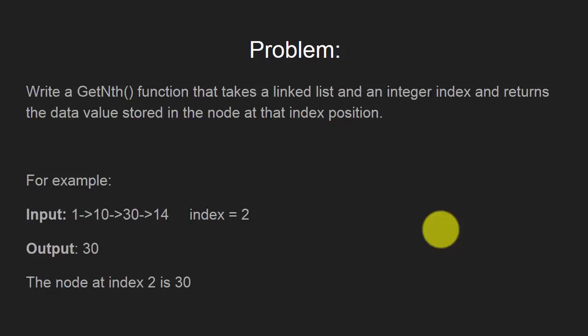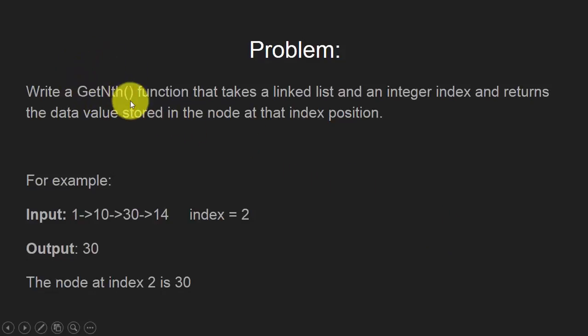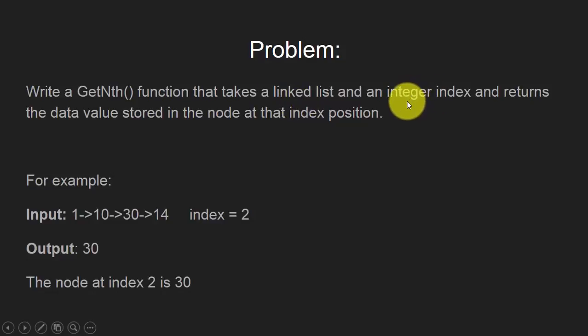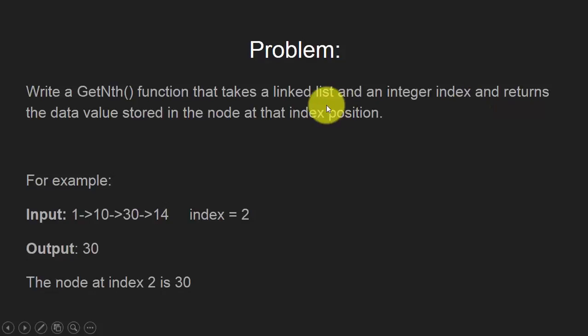In other words, we have to write a function named getNth which will take the linked list as an argument — that is the head node of the list — and an integer index, and returns the data value stored in the node at that index position.